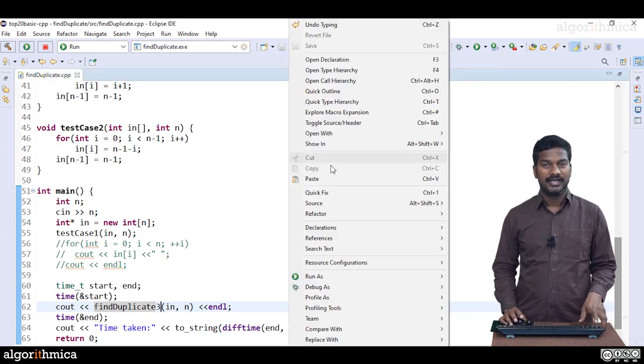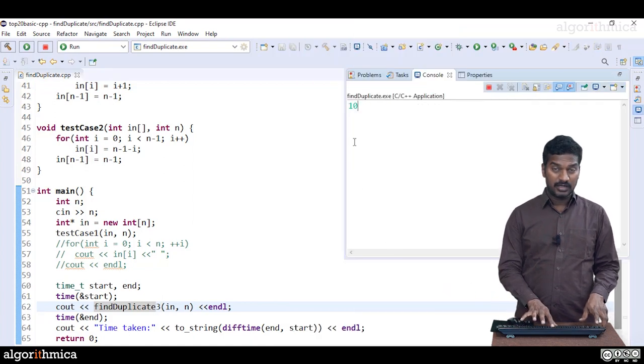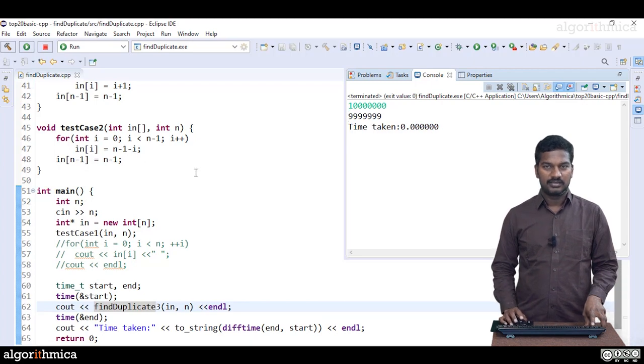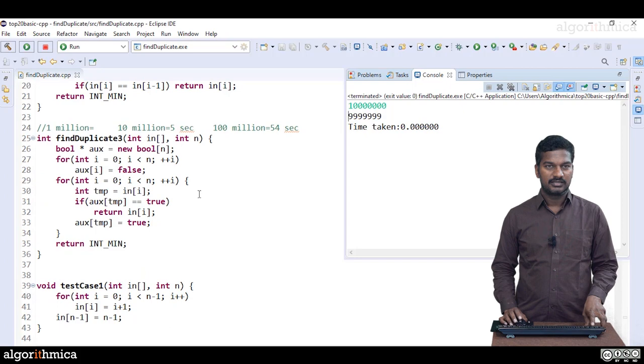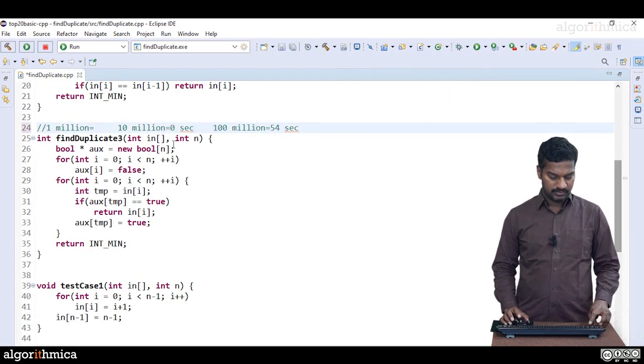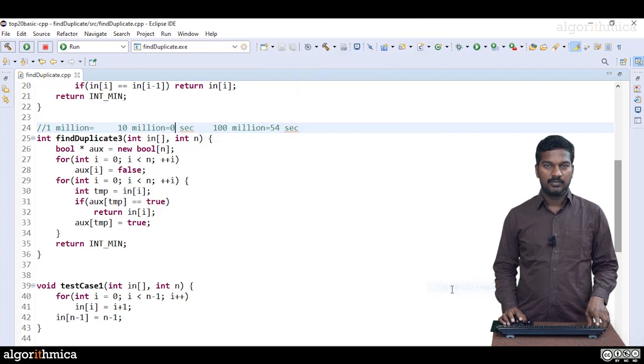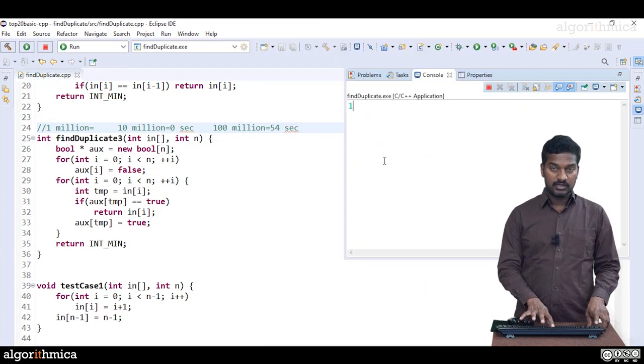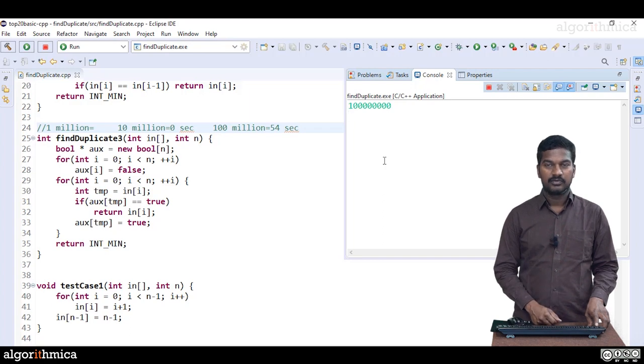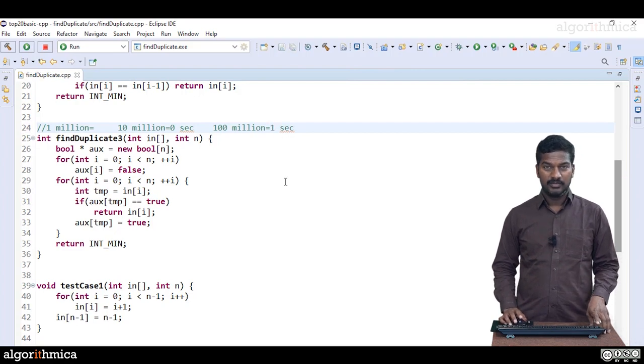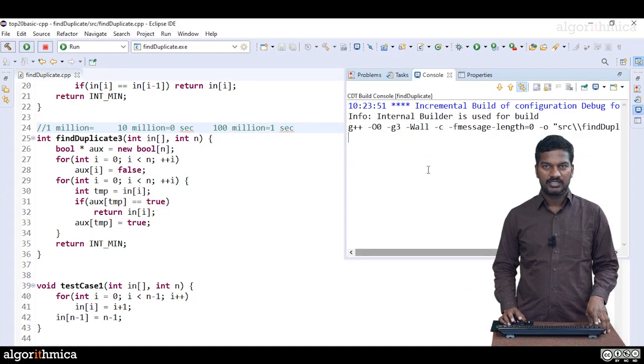Let's go for scale now. Run as 100,000, 10,000 lakh million - it's 10 million. You can see 10 million is nothing, negligible time. Let me write this: 10 million, 0 seconds. Now 100 million. Run as local application: 100,000, 10,000 lakh million, 10 million, 100 million. Just one second.